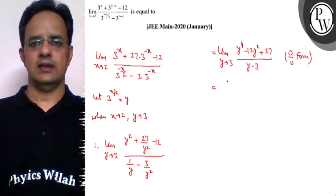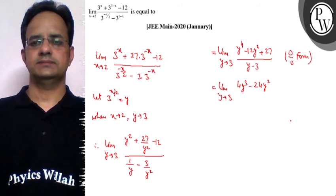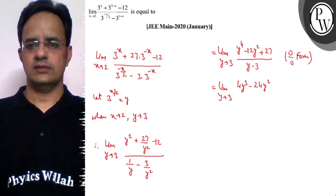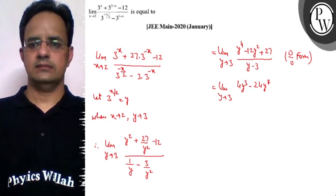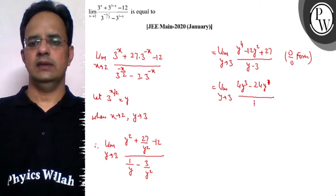We can either factorize this or use L'Hospital's rule. So if we apply L'Hospital's rule, it is 4 y cube minus 24 y. It is 24 y and it is divided by 1.